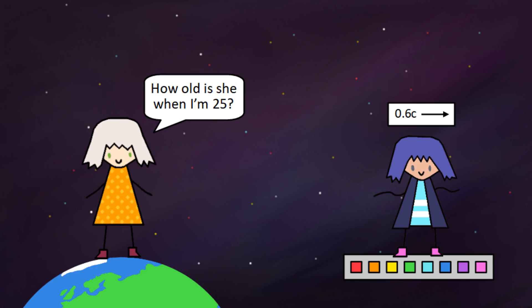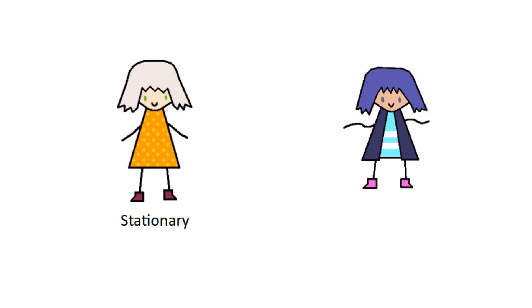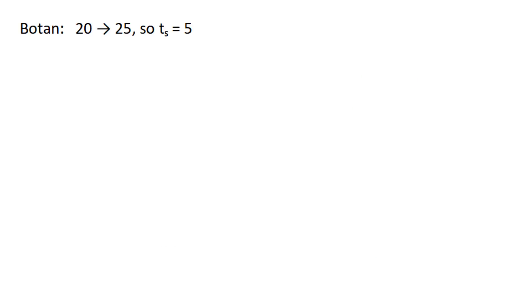Well, since Botan is stationary, and Mary is traveling at 0.6c, it means that Botan is the stayer and Mary is the mover. So if Botan ages from 20 to 25, that means 5 years have passed for her, and since she's the stayer, ts equals 5 years.